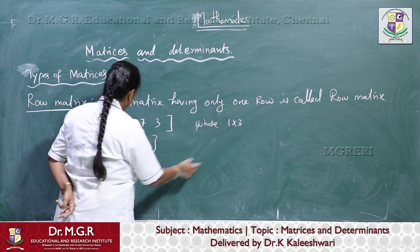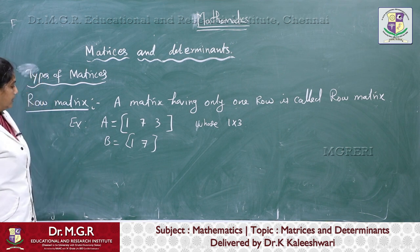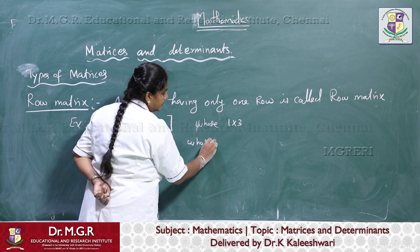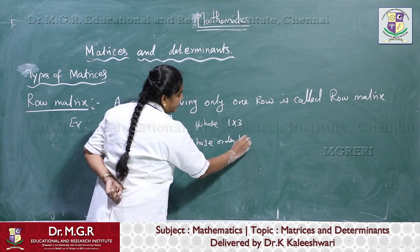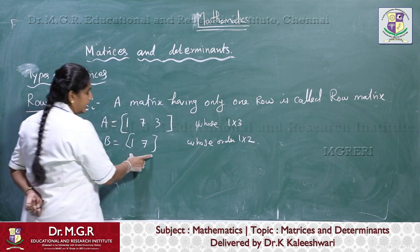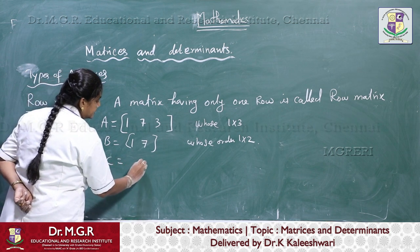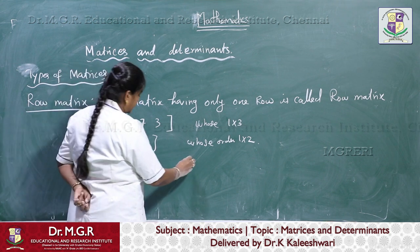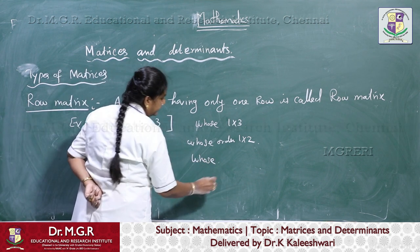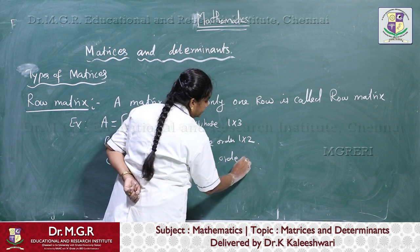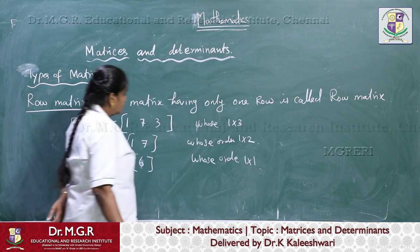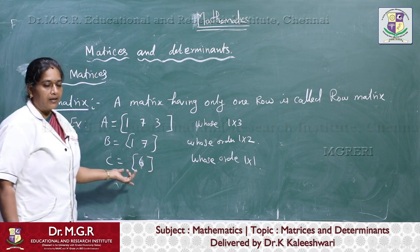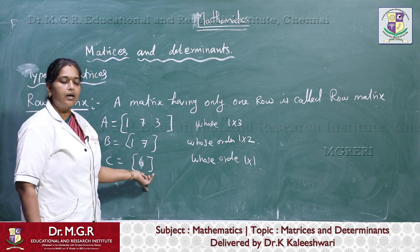One more example: B equal to [1, 7], whose order is 1 by 2, having only one row. And C equal to [6], which has only one row and only one element, whose order is 1 by 1. So a matrix having only a single element can be called a row matrix or column matrix.